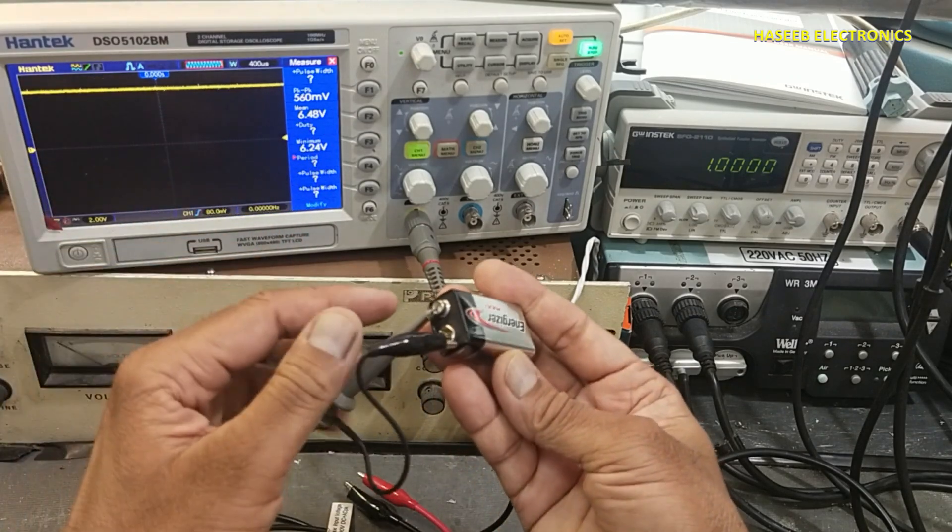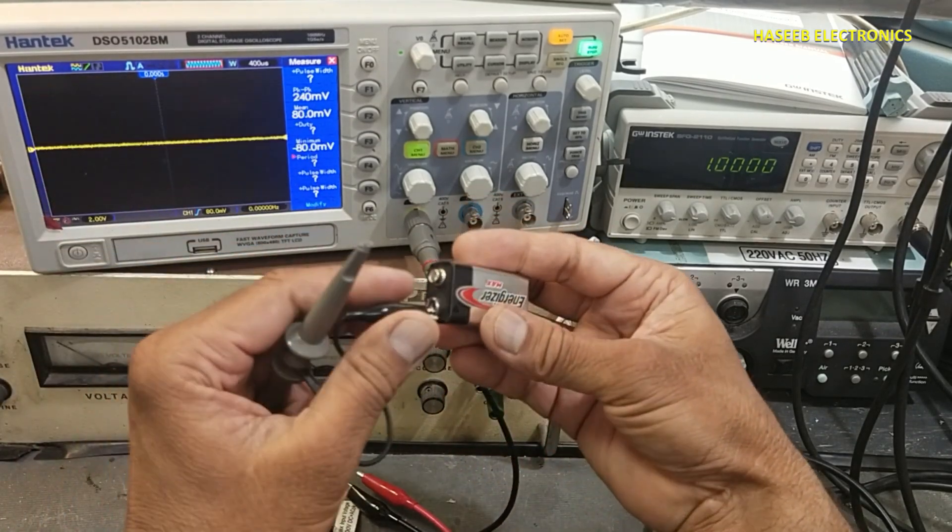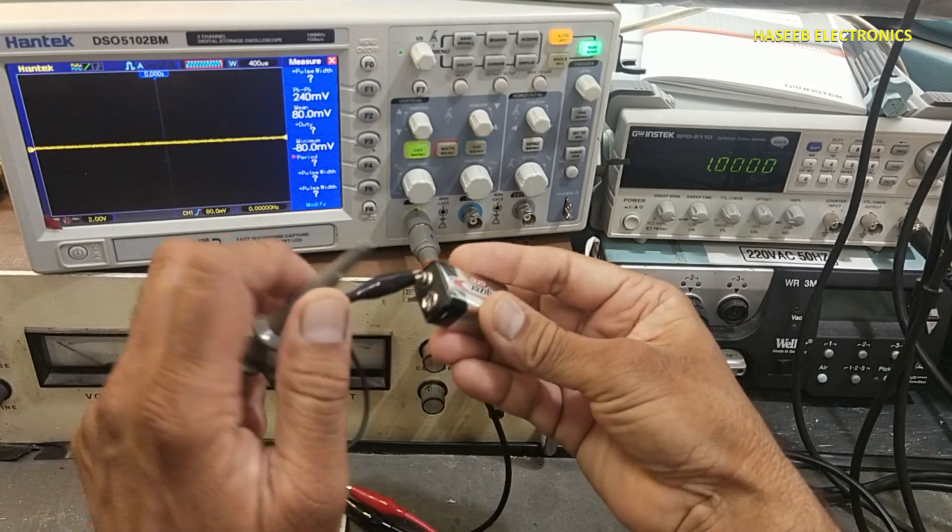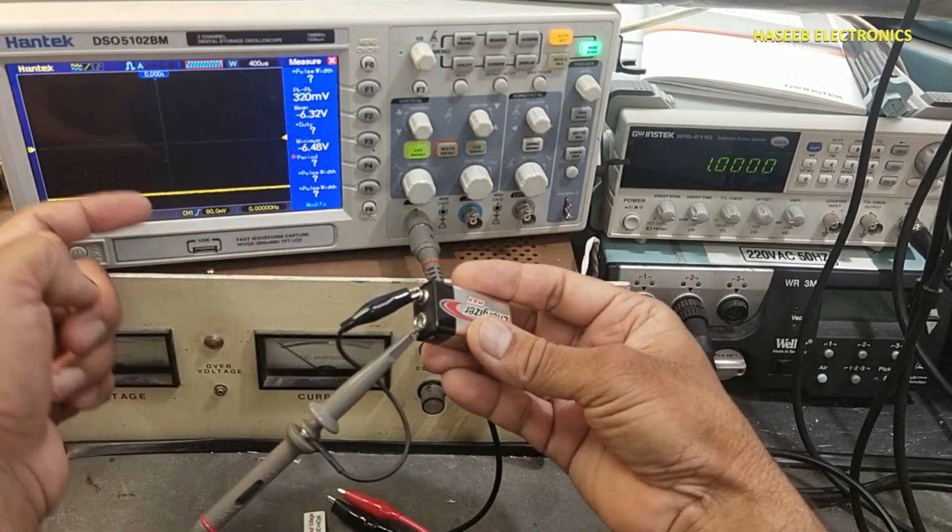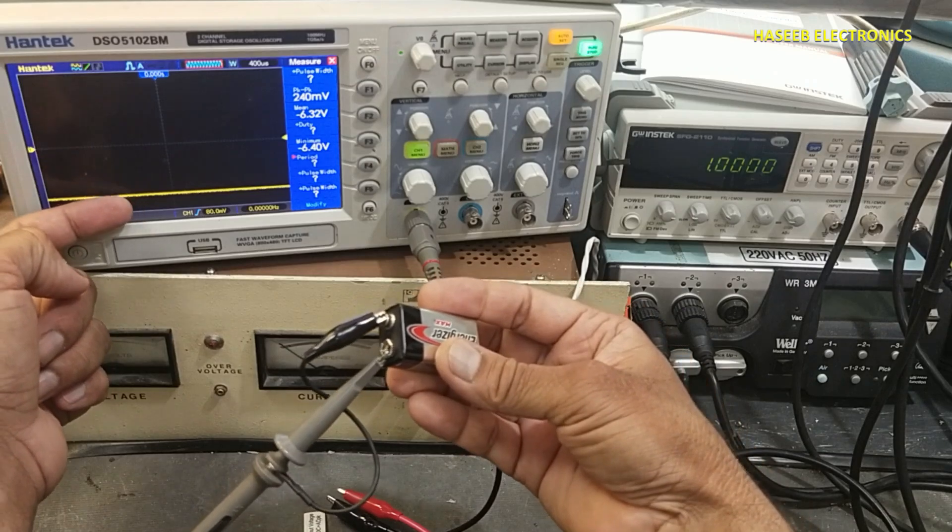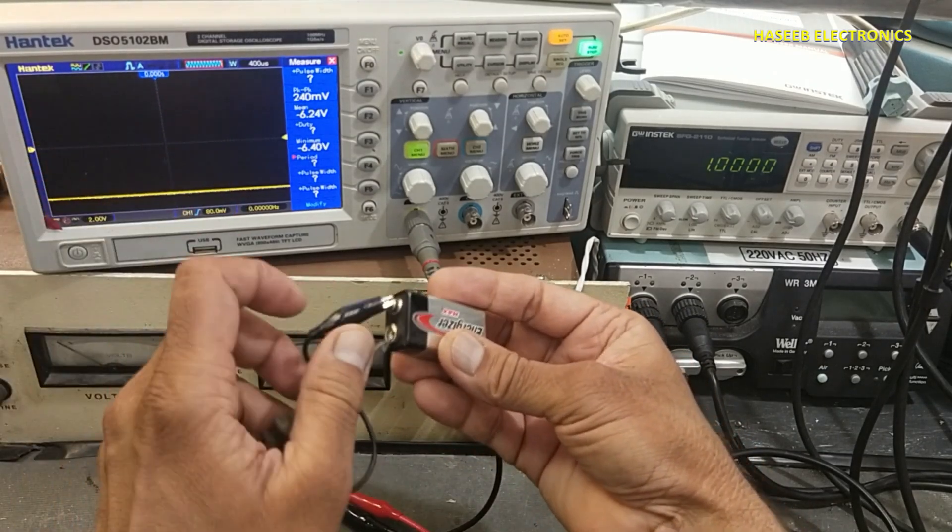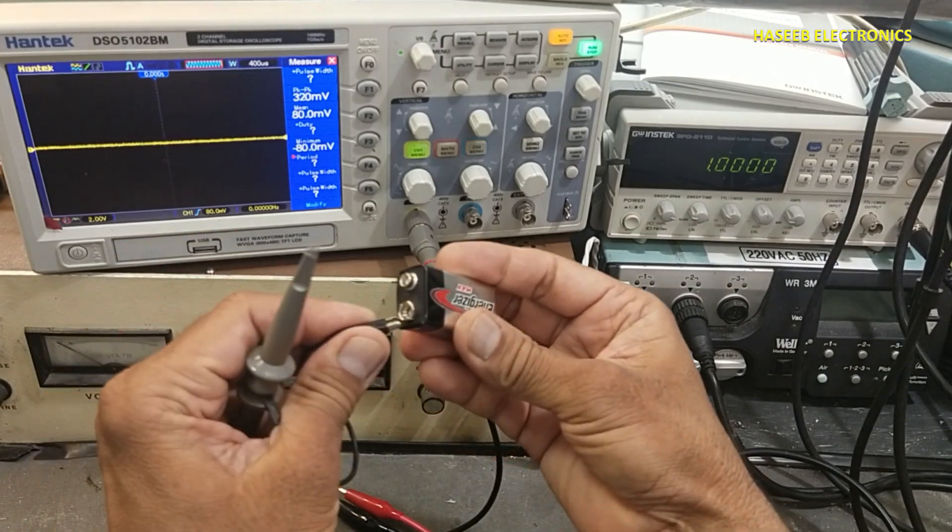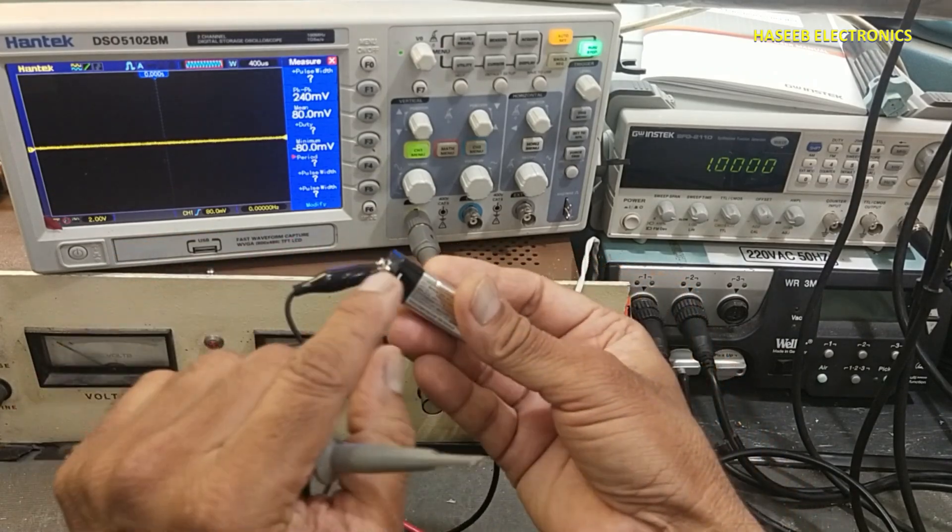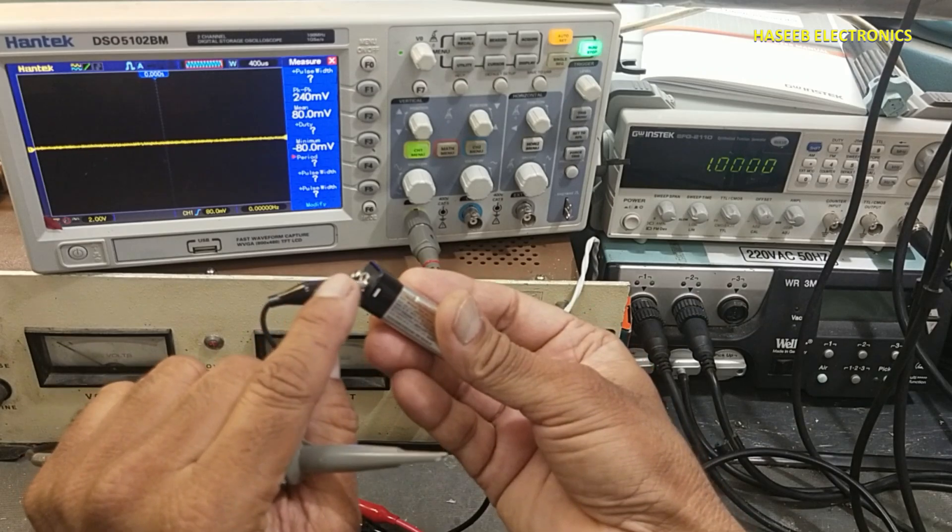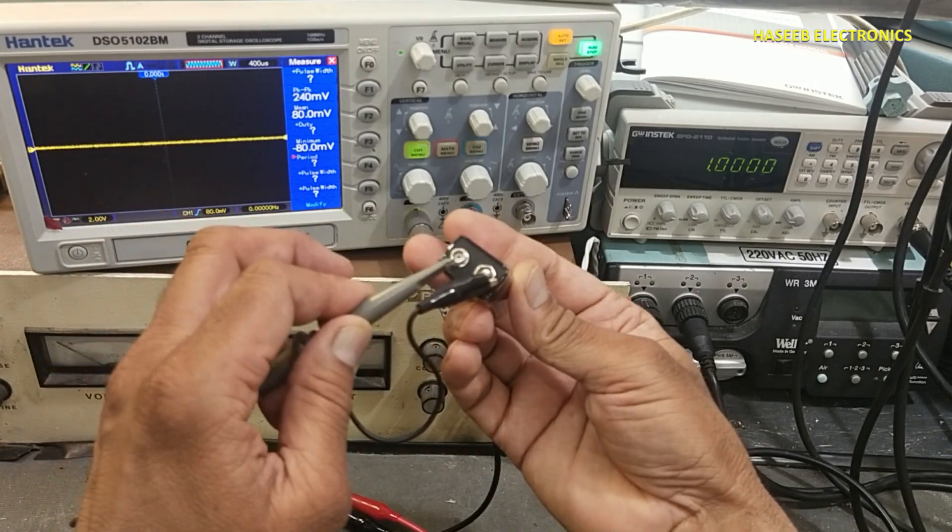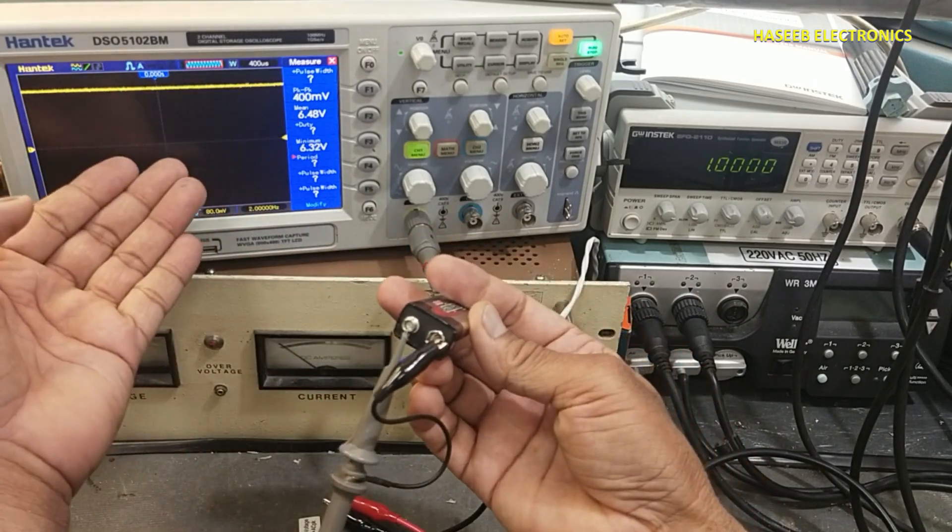If I reverse the test leads, signal is in bottom side, negative peak. And if we check with correct polarity, return line at negative terminal, this line at positive terminal, signal is upside.